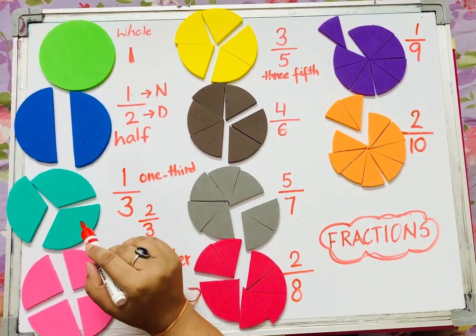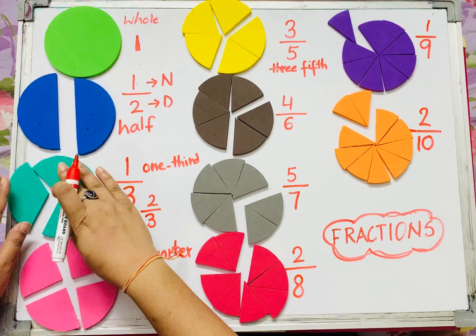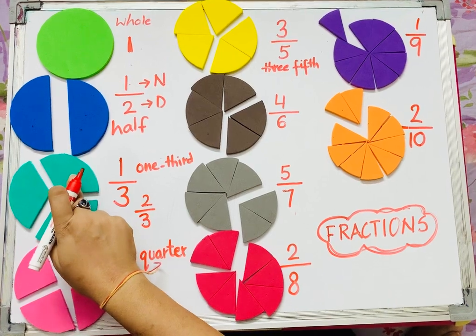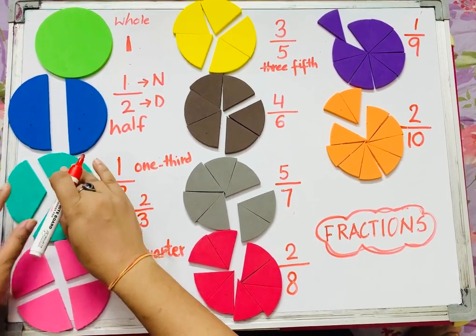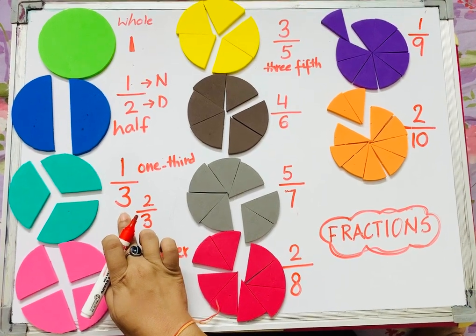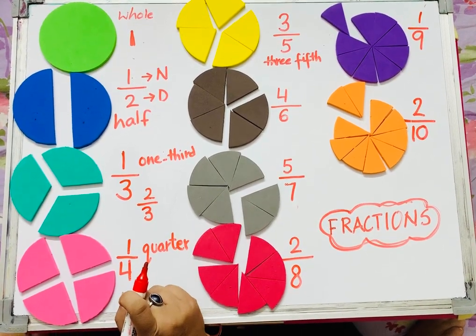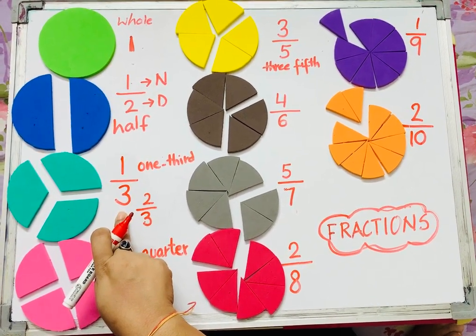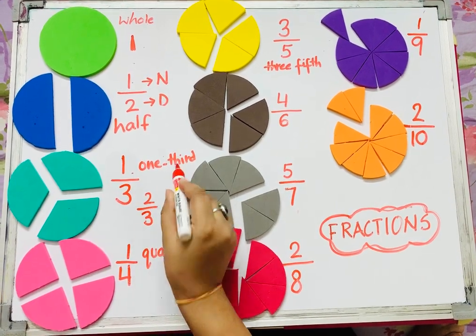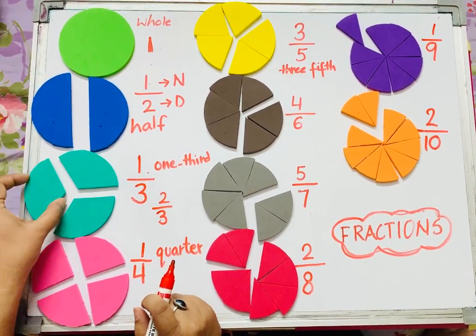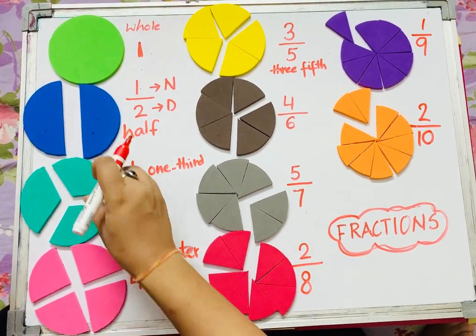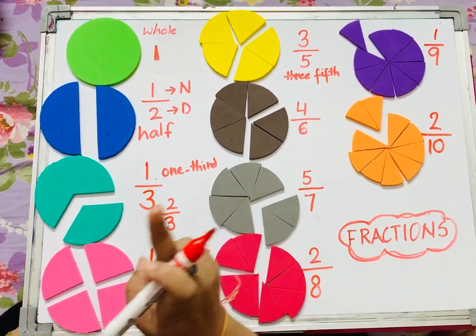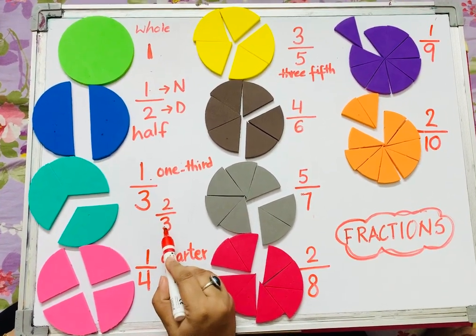Let's understand this better with another example. In this particular pizza, I have to share it with two of my friends. I will divide my one whole pizza into three equal parts, so each one of us will get one out of three parts. So my fraction will be one third — that means I got one third of the pizza. But today I'm really hungry and I want to have two parts of it, so my fraction will change to two by three.